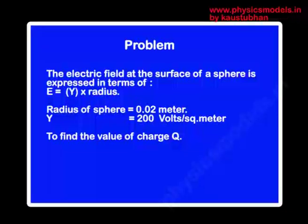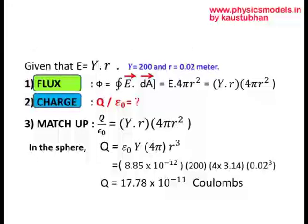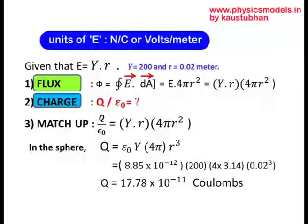So let's look at a problem to get our numbers better. There is a problem where E is defined as Y into radius, so Y and the radius is already given in the problem, it's a sphere. So for a sphere we have to plug in the surface areas 4πr², all the flux lines are radial. So find the flux E·4πr², find the charge which is q by epsilon 0, so just plug it into the equation and you get the value of q.